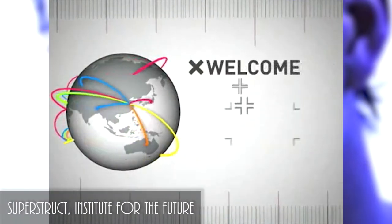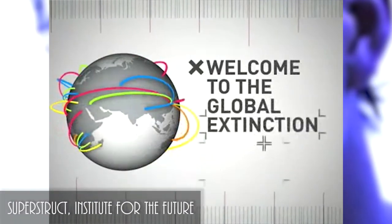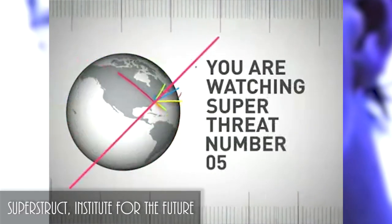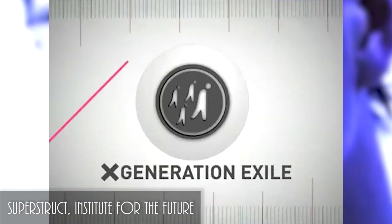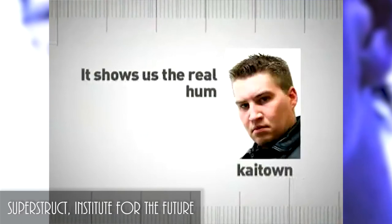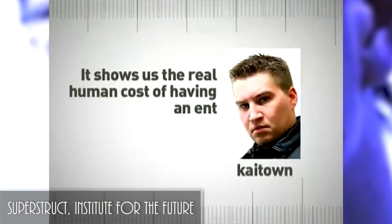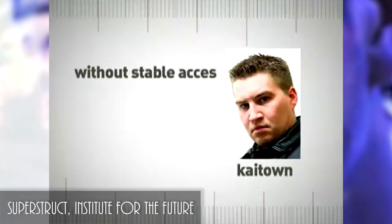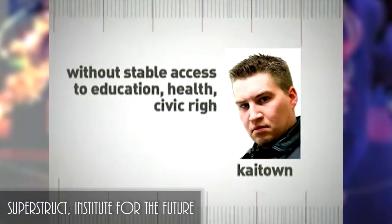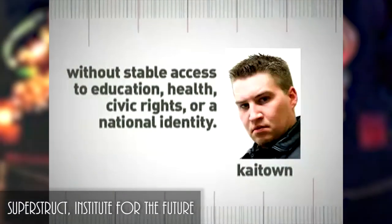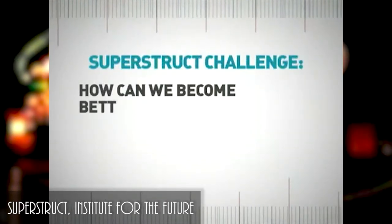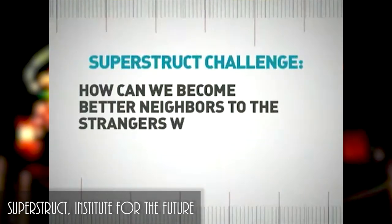Welcome to the Global Extinction Awareness System. You are watching super threat number five, generation XI. It shows us the real human costs of having an entire generation grow up as citizens of nowhere, without stable access to education, health, civic rights, or a national identity. How can we become better neighbors to the strangers who need us?